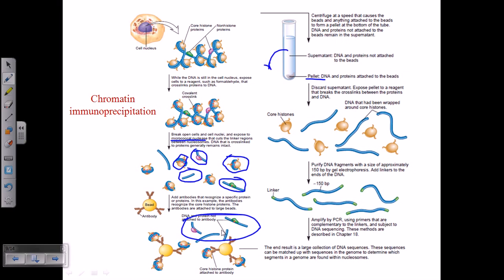If we take the supernatant out we get DNA sequences and DNA with non-histone proteins. If we look at the pellet, we can treat it with high salt concentration to get two different species: one is protein, another is DNA. Treating with high salt concentration will ultimately lead to release of the DNA sequence from the core.